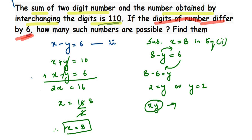So if we take the number xy together — meaning 10 into x plus y — substituting gives us 82. So the required number is 82. I hope this question is clear. Thank you so much for watching.